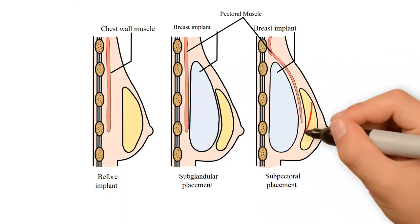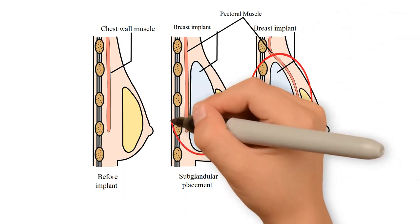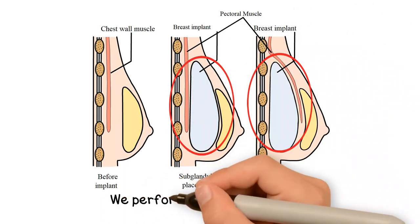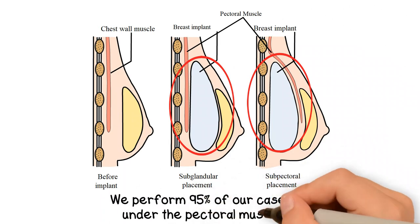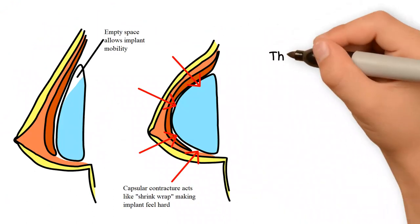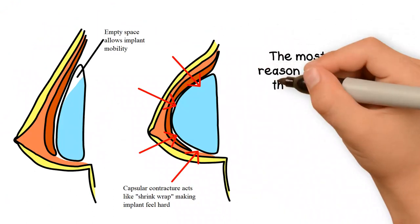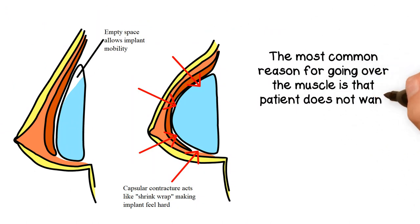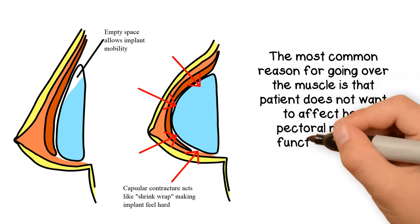The implant can be placed under or over the pectoral muscle. We perform 95% of our cases under the pectoral muscle because of its lower rate of capsular contracture and symmastia that some people call the uniboob look. The most common reason for going over the muscle is when the patient does not want to affect her pectoral muscle function and to avoid animation deformity.